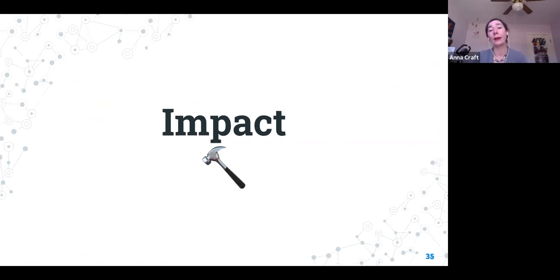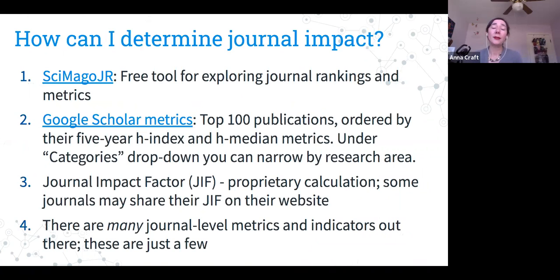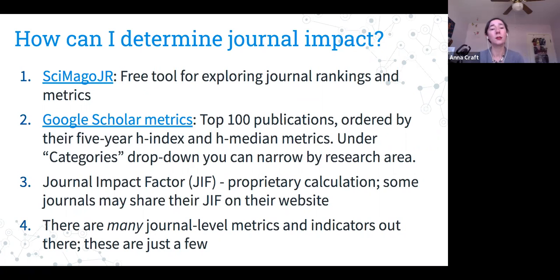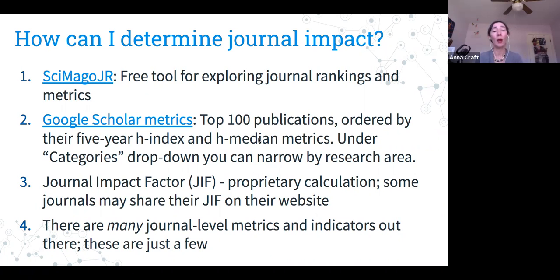Moving on to impact. There are many ways to look at journal impact. SCImago JR is a free tool for exploring journal rankings and metrics. Google Scholar Metrics is also free, though less useful — it shows the top 100 publications across all disciplines, which isn't always helpful for cross-discipline comparison. SCImago JR provides more detail. You've probably heard of impact factor — there is a proprietary calculation called journal impact factor, currently owned by Clarivate Analytics.